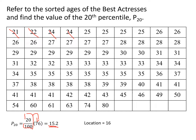Location 16 means we count to the 16th number in our set. Counting through the data, we reach location 16. So the 20th percentile, P20, equals 27.